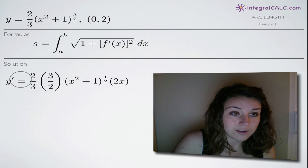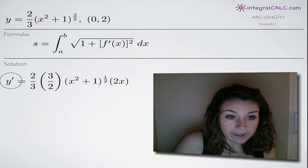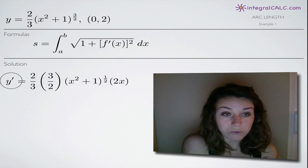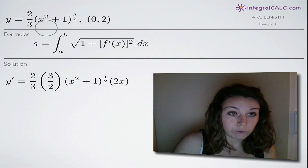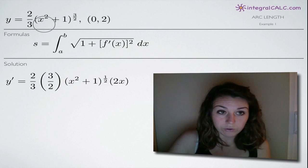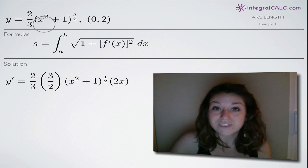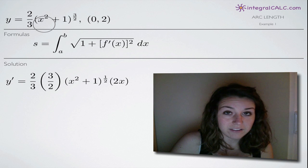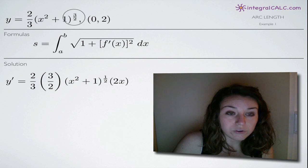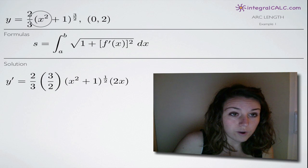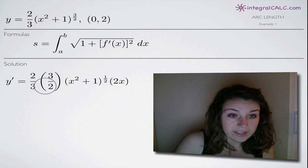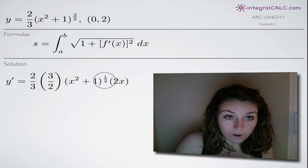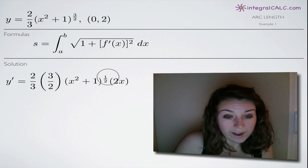We're going to take the derivative of our original function y. And we're going to need chain rule to do it. If you're having trouble with chain rule and you need help, please go visit that section of my website. It is a complicated concept, so I'm just going to breeze through it here. We're going to take the exponent here on this quantity, x squared plus one, and we're going to multiply it out in front as this three halves. And then we'll subtract one from the three halves to get one half here.